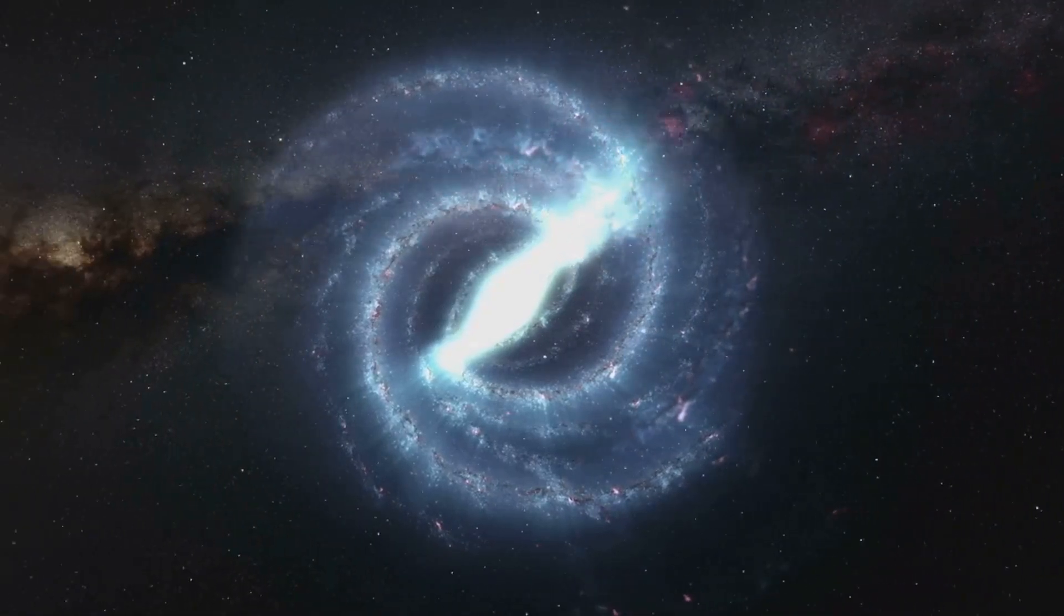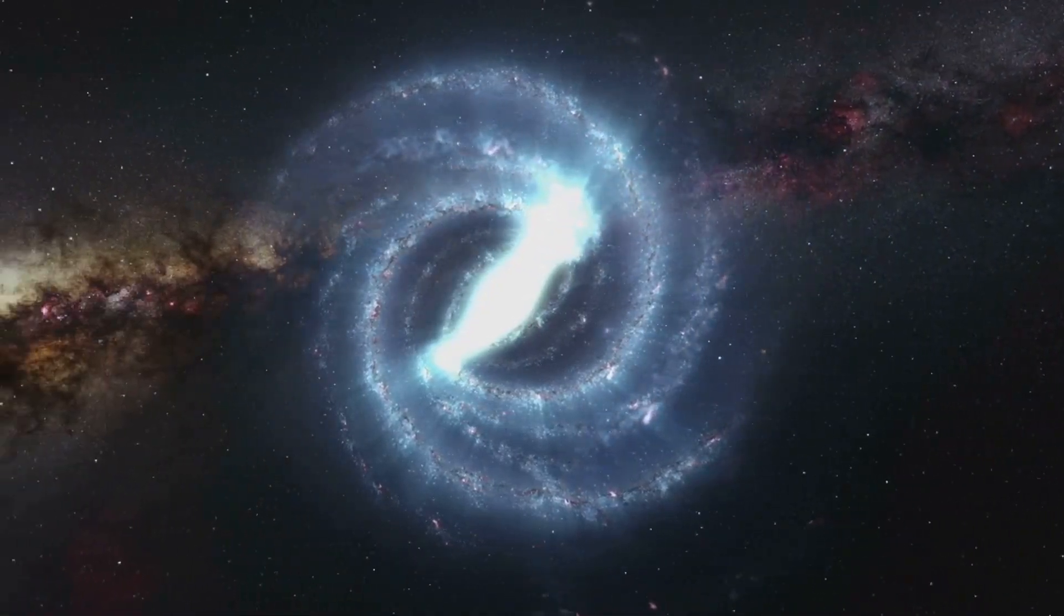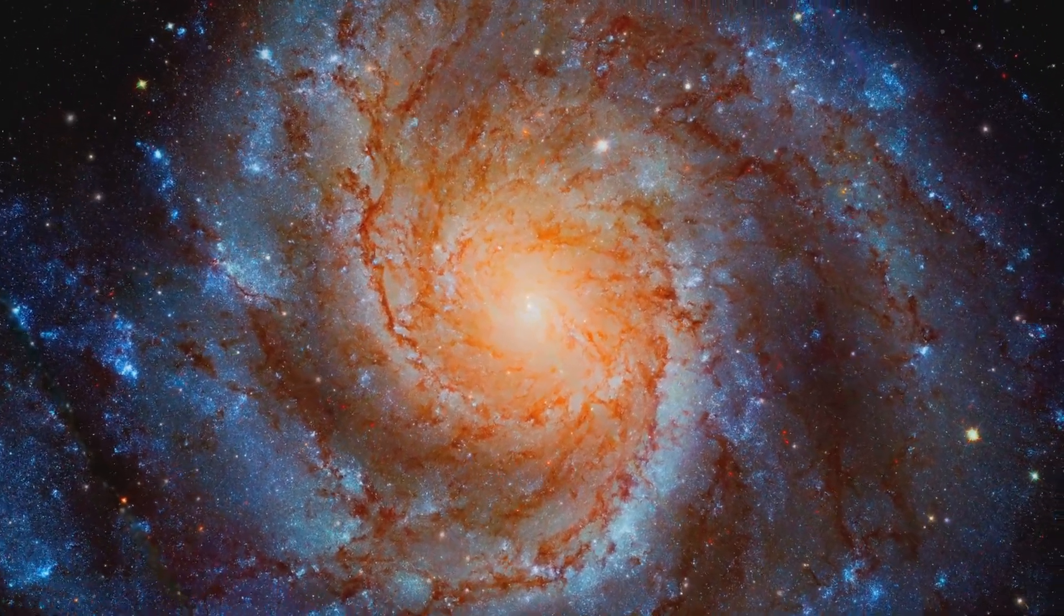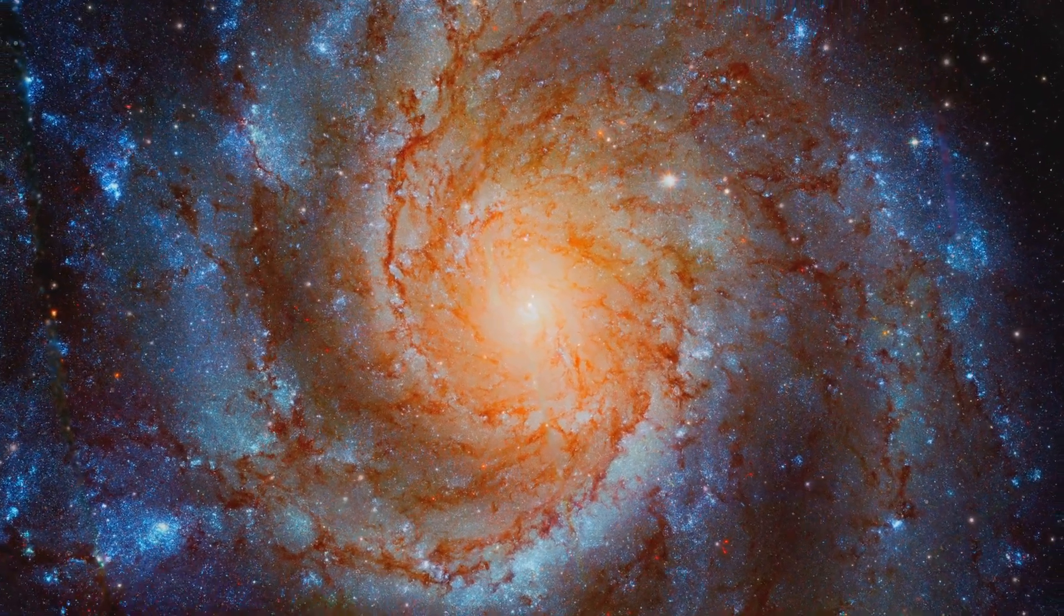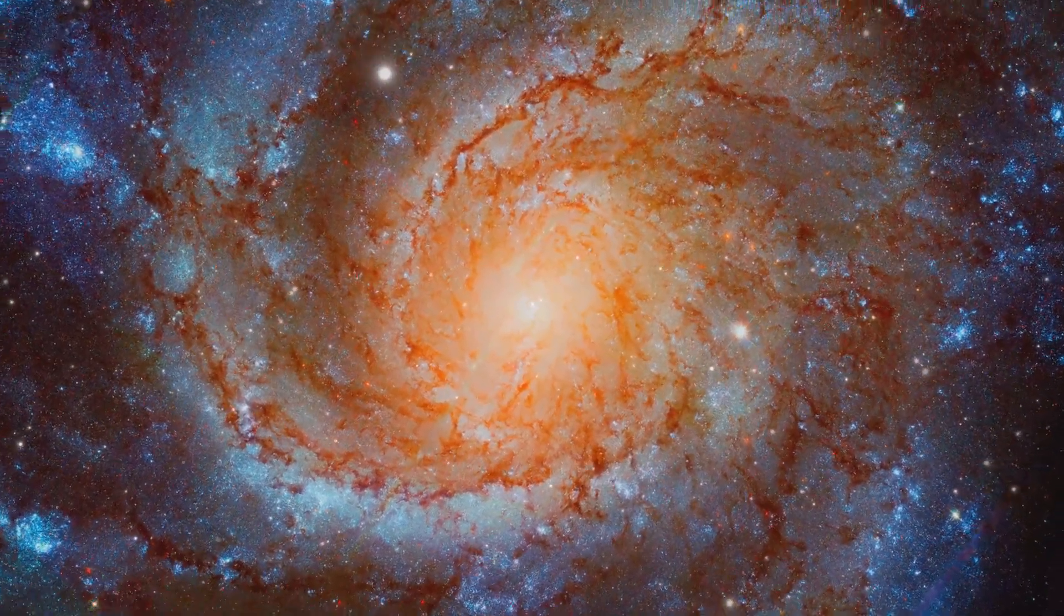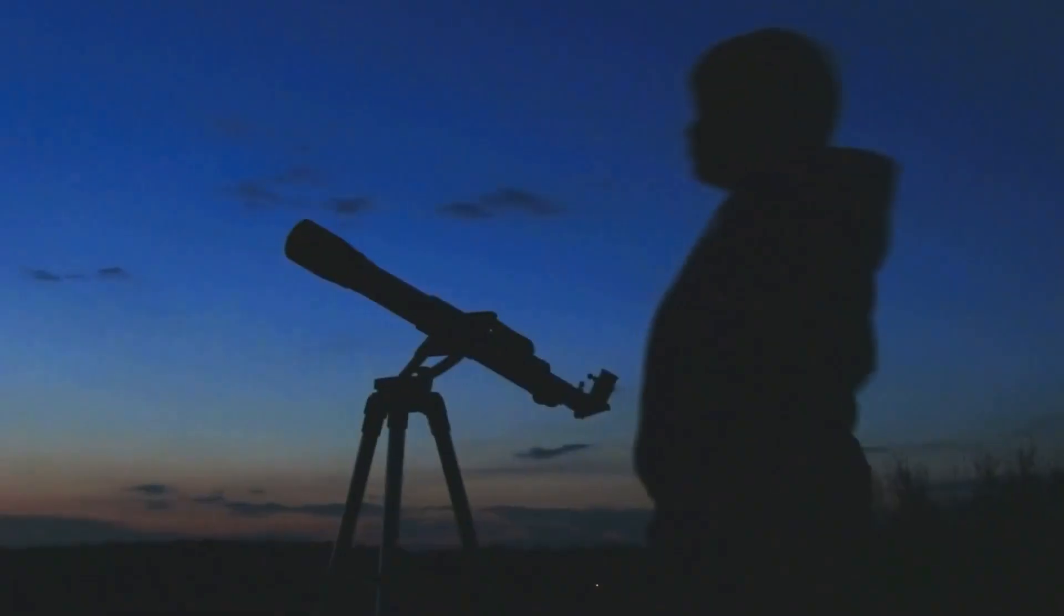One of the most striking features of NGC 5584 is its spiral shape. Picture a cosmic whirlpool, its arms a swirl of stars, dust and gas. It's a common structure for galaxies, including our own Milky Way, but it's no less magnificent for its familiarity.